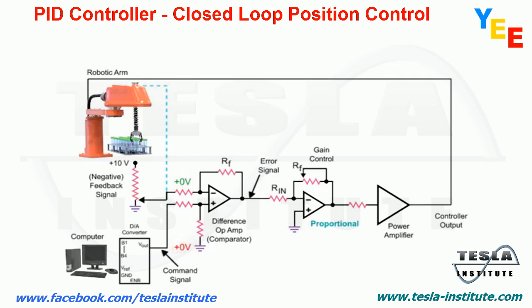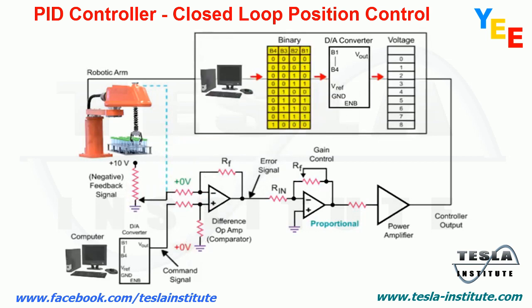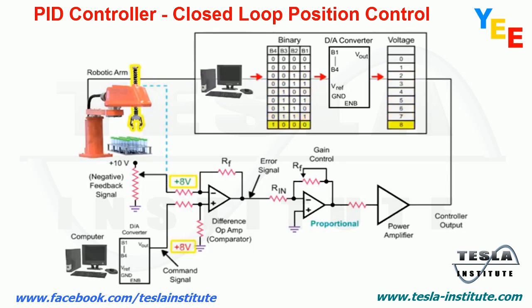To change the arm to another position, a command signal from the computer is required. The command signal consists of binary numbers that increment until a value is reached that represents the desired position. The binary value is then converted to an analog voltage by the digital-to-analog converter that indicates the position that the arm is required to move.